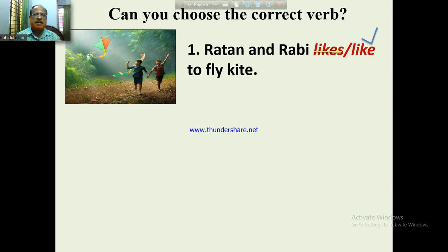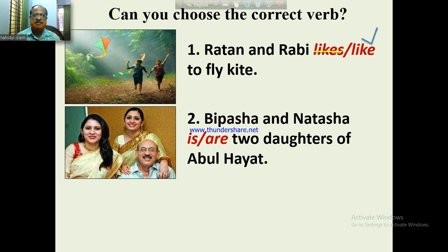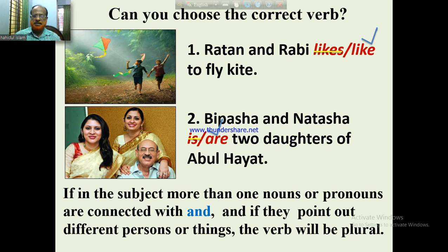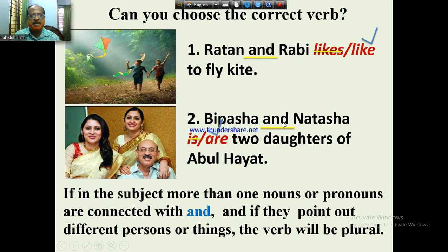Raton and Robi like to fly a kite. Vipasha and Natasha are two daughters of their father. If in the subject more than one noun or pronoun is connected with 'and', and if they point out different persons or things, the verb will be plural.